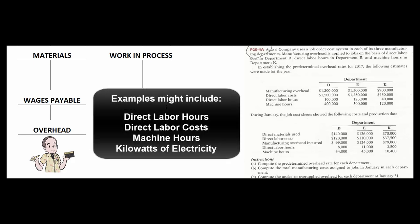If we're in a labor-intensive business but laborers earn different wages and higher-paid workers use more overhead, we'll use direct labor costs. If we're in a highly mechanized business, we might use machine hours as our cost driver.